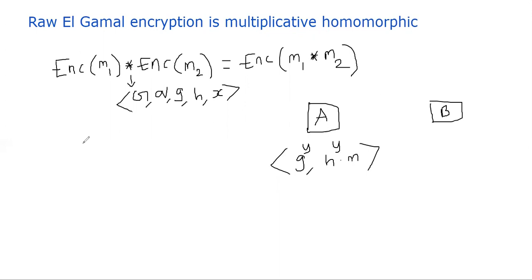And we talked about how this is decrypted. That's not what I'm going to talk about now. So let's say there's another message. Let's call this M1 and there's another message. Let me say this is G power Y1. The next message is G power Y2.